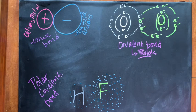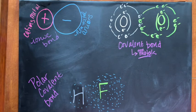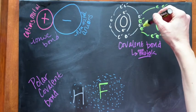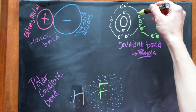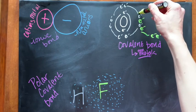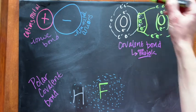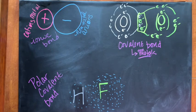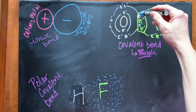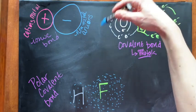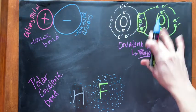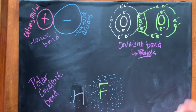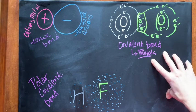Now covalent bonds — take oxygen as an example — involve the sharing of outer electrons. If they share two electrons each, and because they're sharing all four of these, this is actually a double bond, which we'll talk about later. These electrons are shared evenly, and this is a covalent bond, which occurs between non-metals.